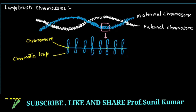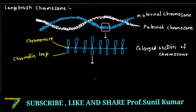Now I will focus on just one chromatin loop and zoom in further. When I zoom in, we observe the lampbrush chromosome — and why it is called lampbrush is because the structure appears like a brush. We see the upper loop and the lower loop, and in between there are folds. These folds are called chromomeres.